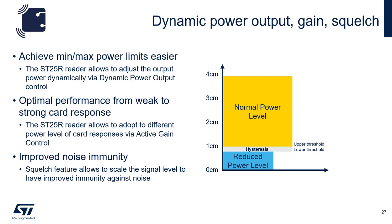Dynamic power output allows the reader to adjust the power dynamically via the dynamic power output control, based on a hysteresis and an upper and lower threshold determined by the user. This is a very useful feature when going through EMV certification where the minimum and maximum field strength is listed at each of the measurement points. The active gain control, or AGC, allows the reader to adapt its receiver settings based upon the power level of the card. Squelch allows you to scale the signal level based upon the noise on the receiver.